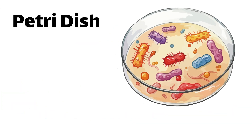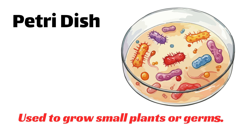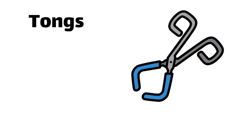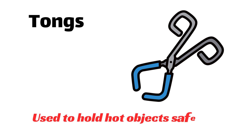Petri dish — used to grow small plants or germs. Tongs — used to hold hot objects safely.